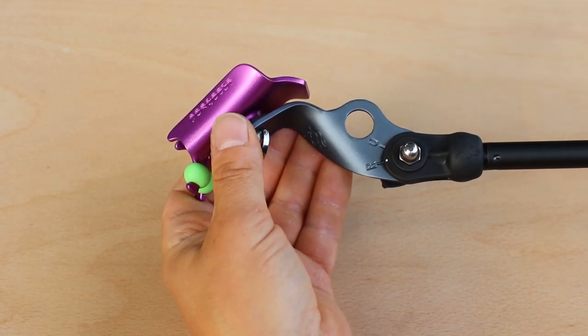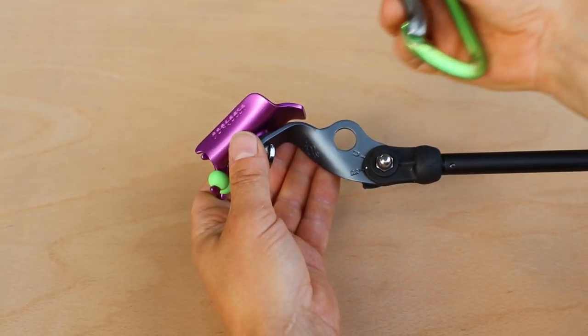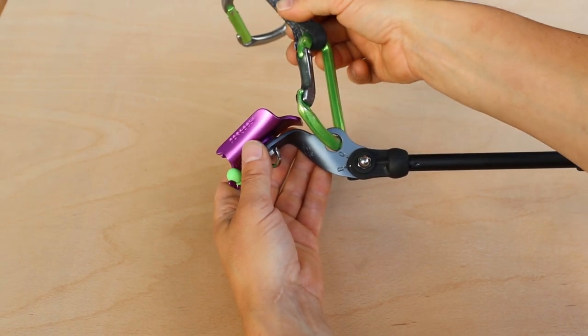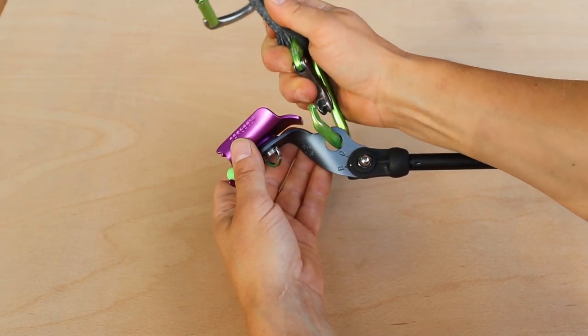Once your clipstick is assembled, you might want to send it up on a rope to a climber or clip it to your harness, in which case you can use the hole in the center of the bracket to clip onto a carabiner or quickdraw.